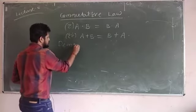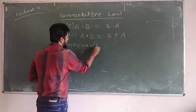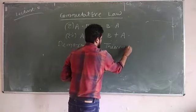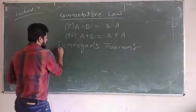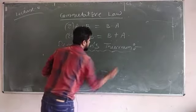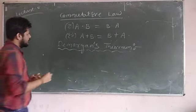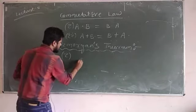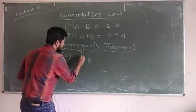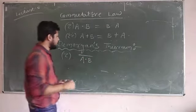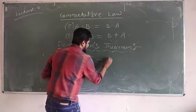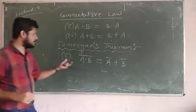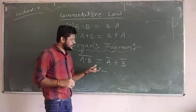In your semester examination they repeatedly ask about De Morgan's theorem. De Morgan proposed two theorems. The first is: (A AND B) complement is always equal to A bar OR B bar. This is the first law.